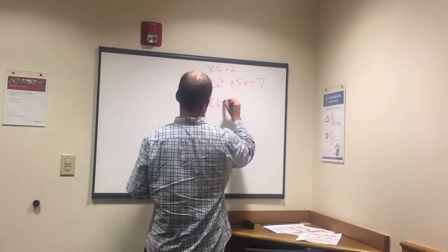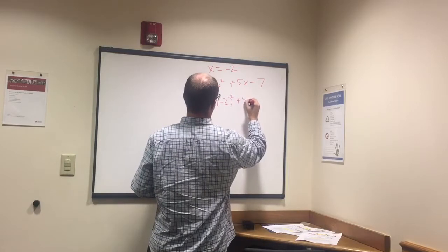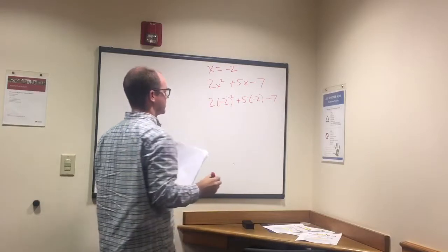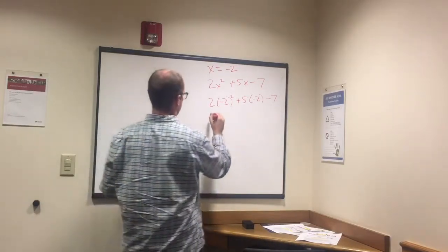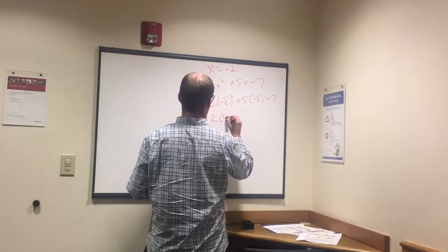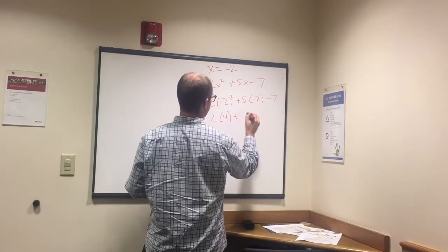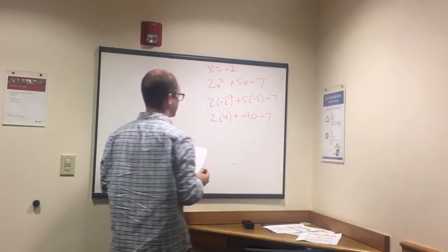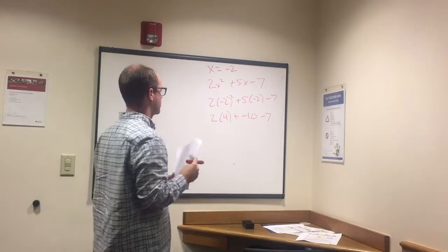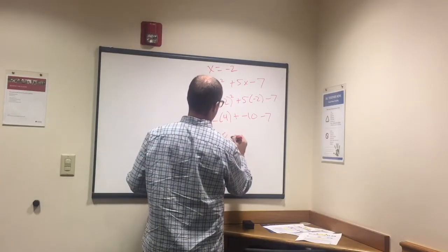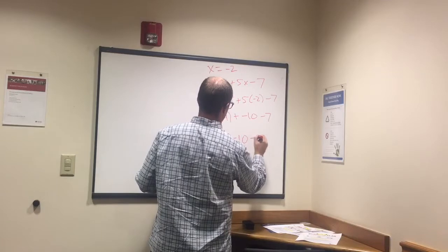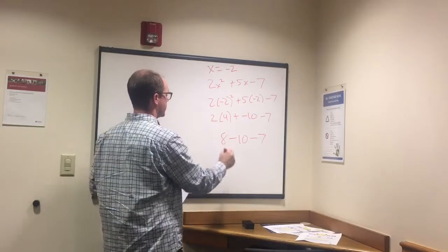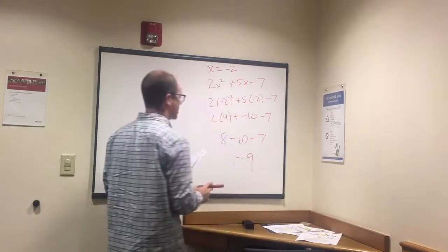So 2 times negative 2 squared plus 5 times negative 2 minus 7. So what does that leave us with? 2 times 4 plus 5 times negative 2 is negative 10 minus 7. 2 times 4 is 8 minus 10 minus 7. So we've got 8 minus 10 is negative 2. Negative 2 minus 7 is negative 9.